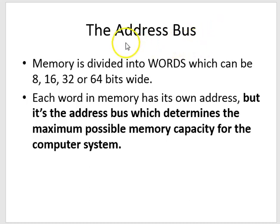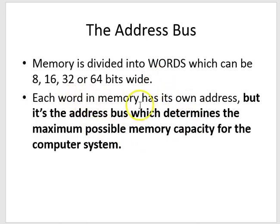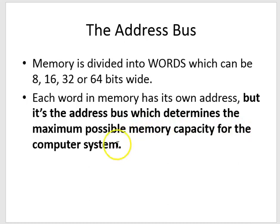Memory is divided into words, which can be 8, 16, 32, or 64 bits wide. Remember the 6502 processor had a 16-bit address bus and an 8-bit data bus. Each word in memory has its own address, so any data stored in memory can be accessed by addressing it. Crucially, it is the address bus which determines the maximum possible memory capacity for the computer system.